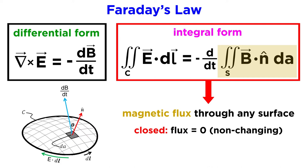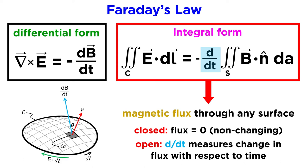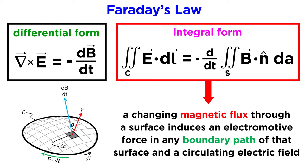If it is closed, flux will equal zero, and it doesn't change with time. The derivative d/dt indicates that we are measuring the change in flux with respect to time. So this essentially states that a changing magnetic flux through a surface induces an electromotive force in any boundary path of that surface, and a changing magnetic field induces a circulating electric field.